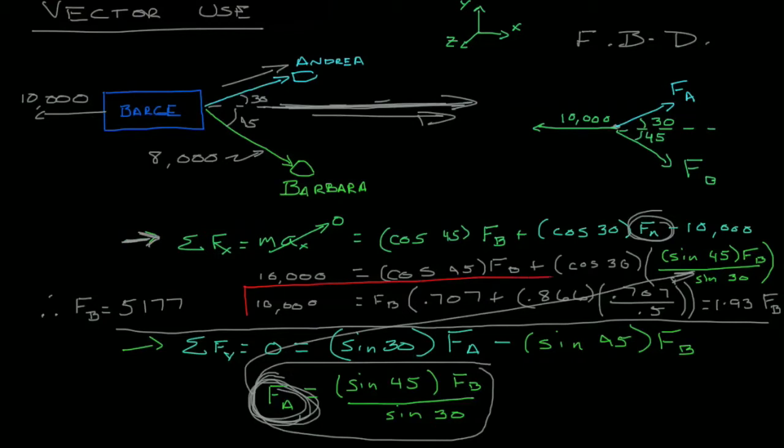And I look at all those, I then put numbers on, you know, here I have cosine of 45. Make that 0.707, cosine of 30, 0.866. So I get all these numbers together, and I find that 10,000 is 1.93 times force B.